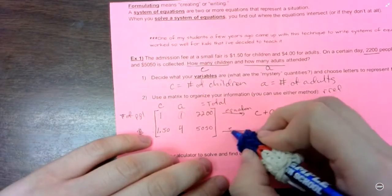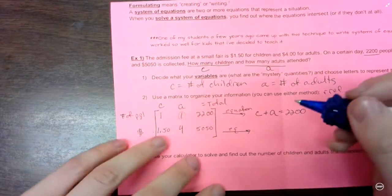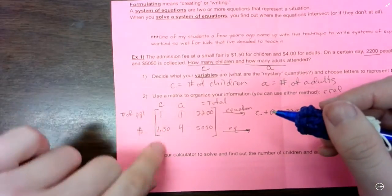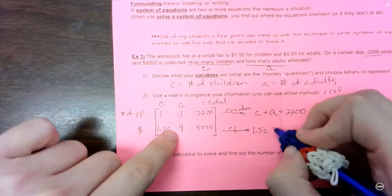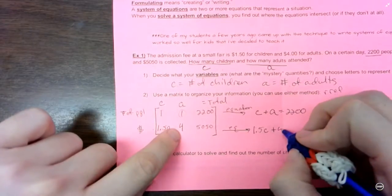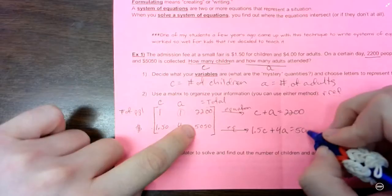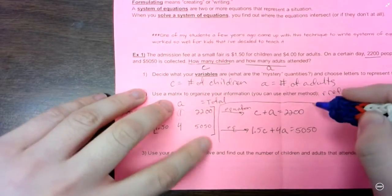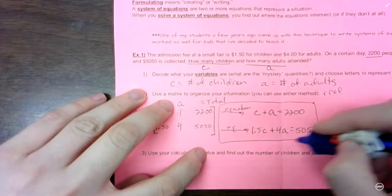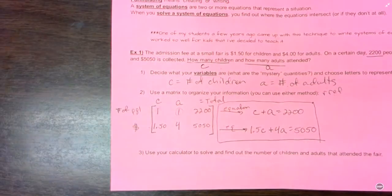My other equation, again if I need the equations, here's my coefficient for C, for child. So 1.5C plus $4 for the adults equals $5,050. So if you needed the equations, that's how you would come up with them once you organize all your information.